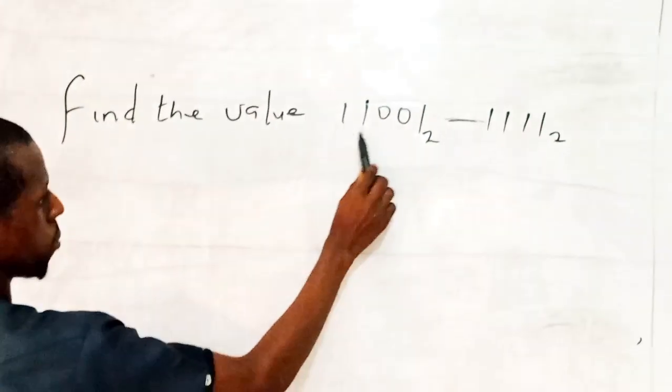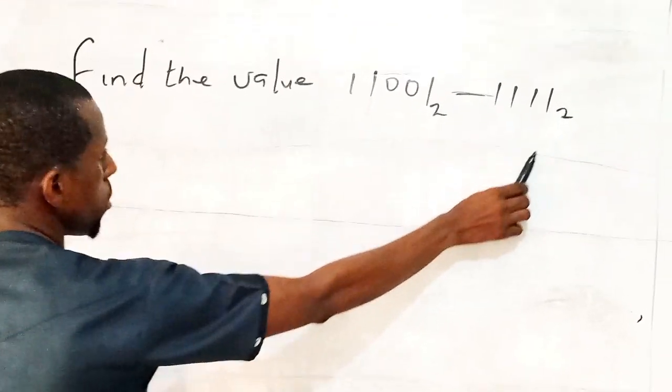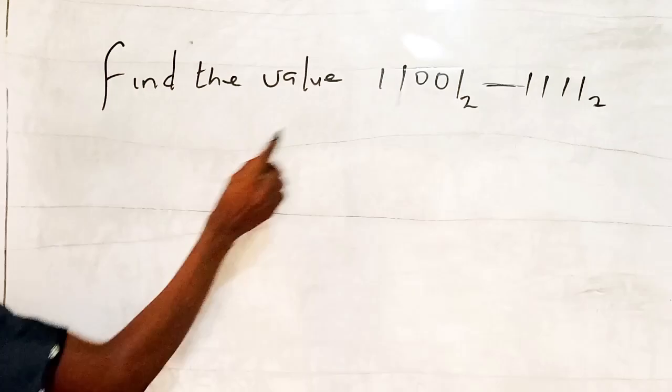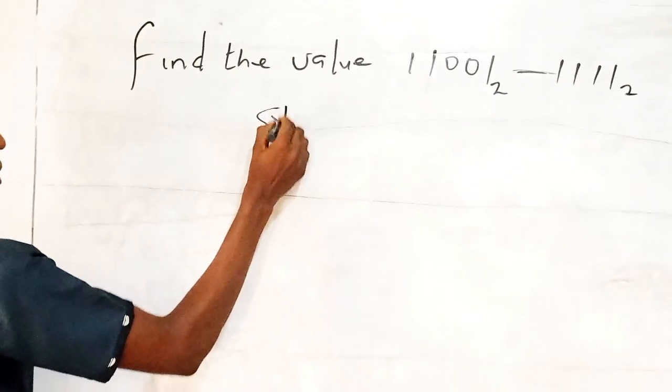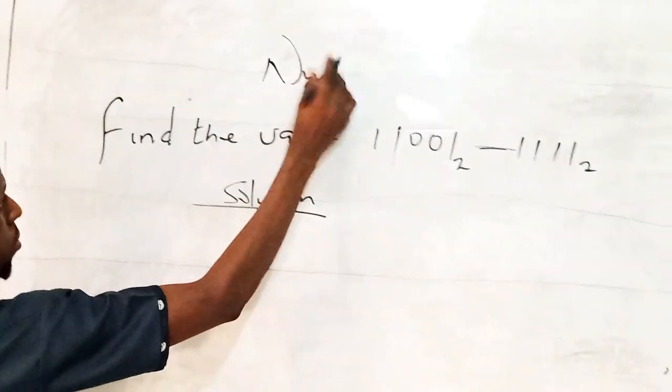Find the value of 1101 base 2 minus 111 base 2. So we have solution. This is a number base, subtraction of number base.